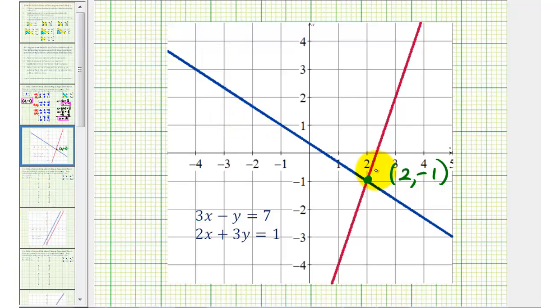Well here is the graph of the two lines. Notice how the point of intersection is the point two comma negative one, verifying our work is correct. Okay, we'll look at a few more examples in the next few videos. I hope you found this explanation helpful.